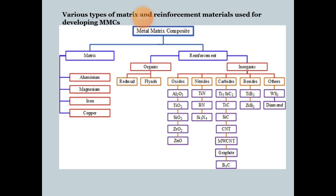Turning to the various types of matrix and reinforcement materials used for developing MMC: metal matrix composites may be classified based on the metal used as matrix material, such as aluminum matrix composites, titanium matrix composites, magnesium matrix composites, copper matrix composites, etc. This figure shows some of the matrix and reinforcement materials used to develop MMC.